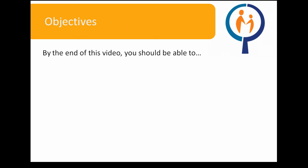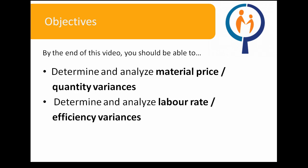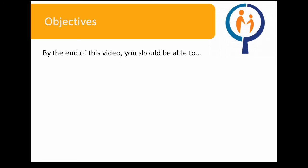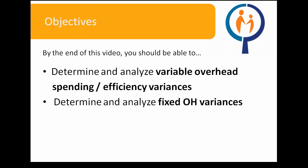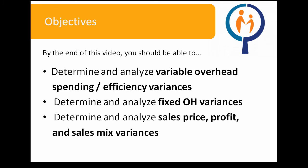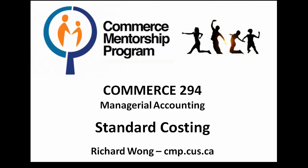This concludes our online tutorial on standard costing. Let's review our objectives for today. By now, you should be able to determine and analyze material price and quantity variances, labor rate and efficiency variances, variable overhead spending and efficiency variances, fixed overhead variances, and sales price, profit, and sales mix variances. Remember to always keep the required in mind — some questions in Commerce 294 may require you to use several tools and solution techniques, so don't get sidetracked and calculate the wrong thing. For additional problems, please visit us online at cmp.cus.ca. If you have additional questions, please consult your professor or teaching assistants. Thank you.